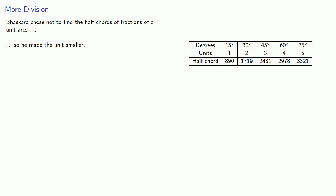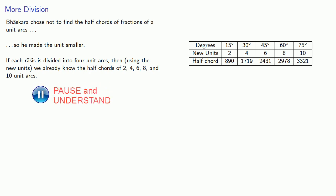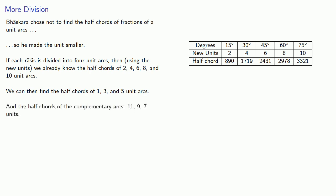So if each racis is divided into four unit arcs, then using the new units, we already know the half chords of 2, 4, 6, 8, and 10 unit arcs. We can then find the half chords of 1, 3, and 5 unit arcs, and the half chords of the complementary arcs, 11, 9, and 7 units.